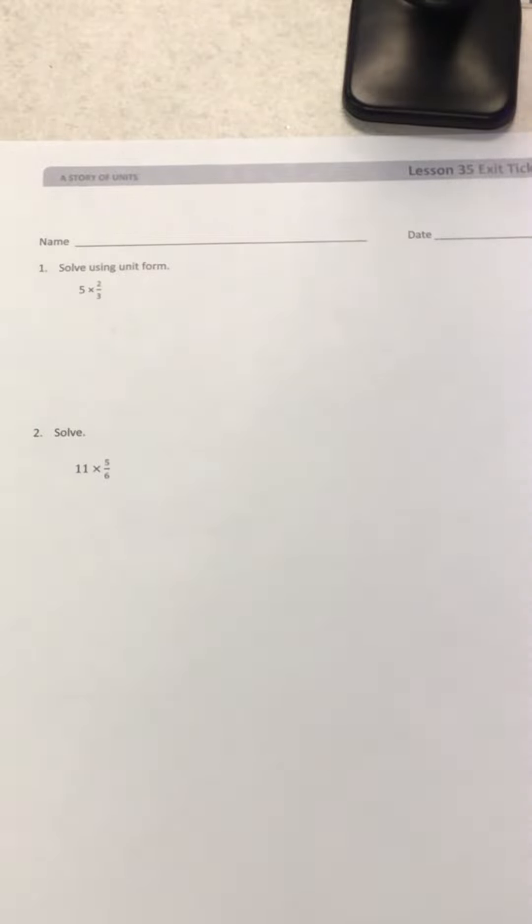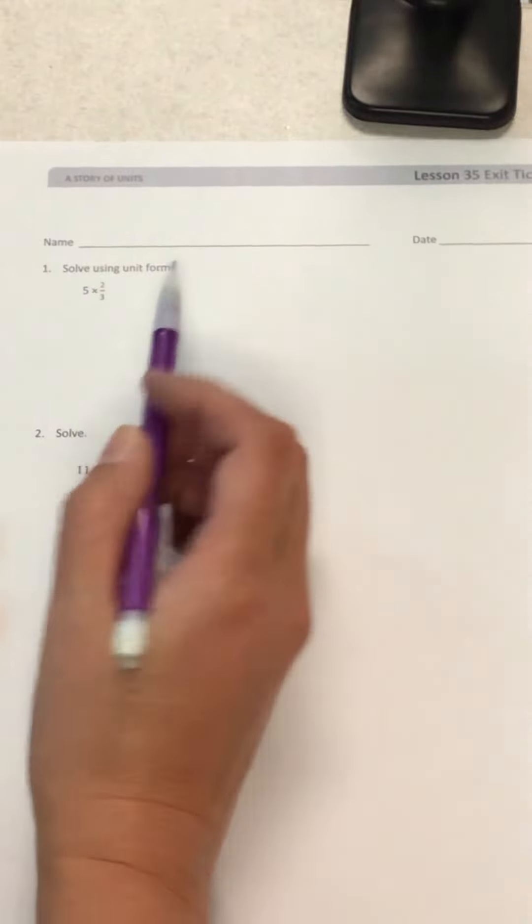So today we talked about using the associative property to multiply a whole number and a fraction. And so this first one, it says solve using the unit form.